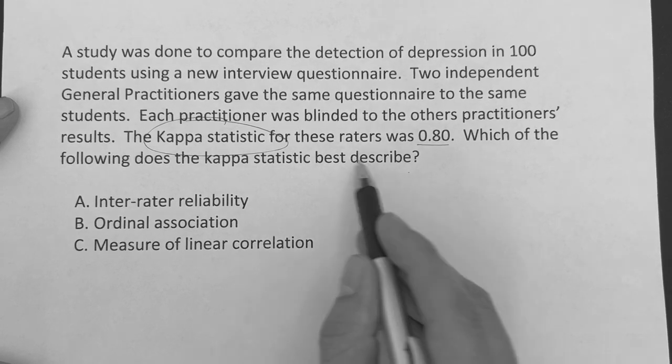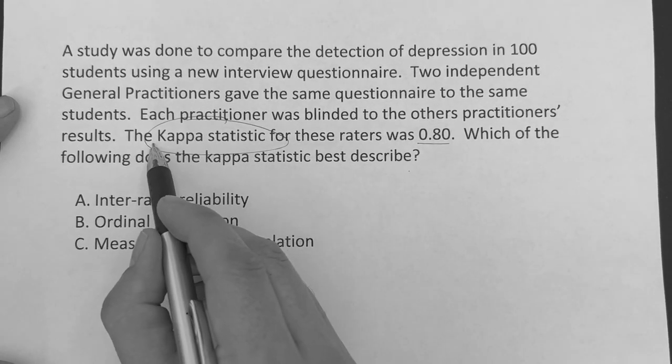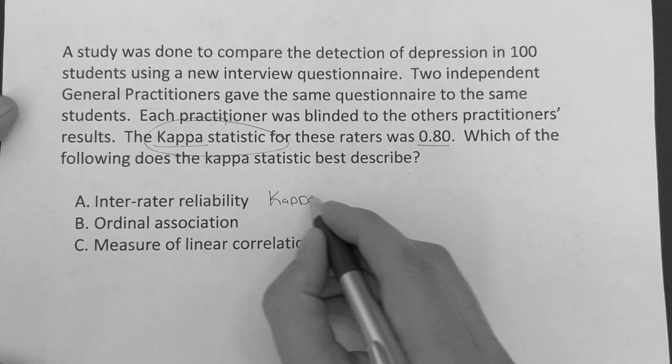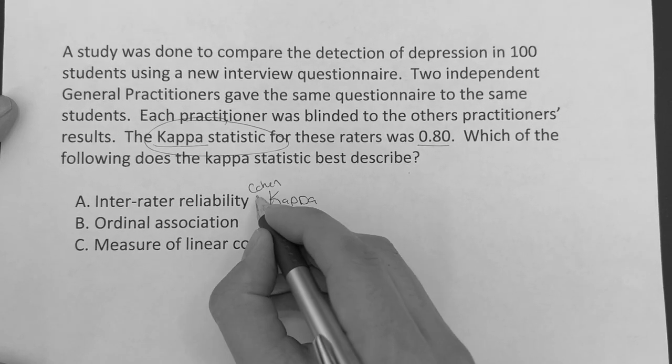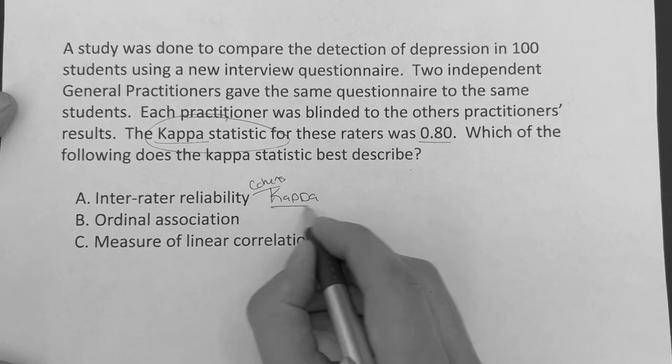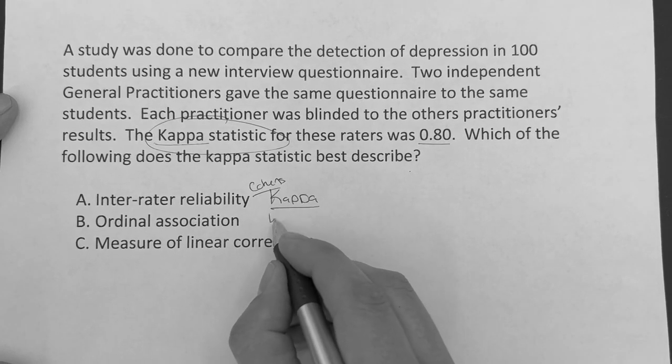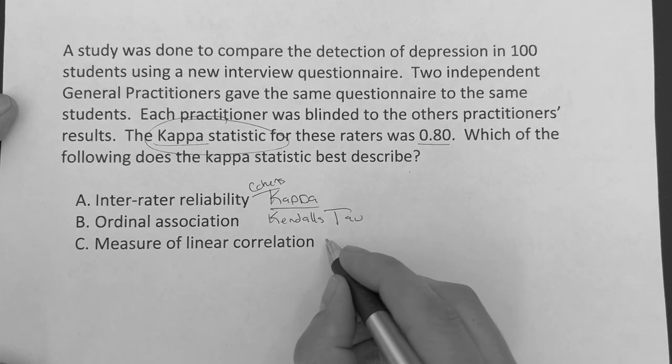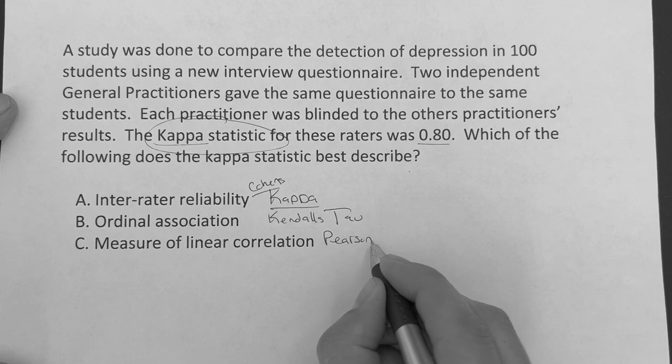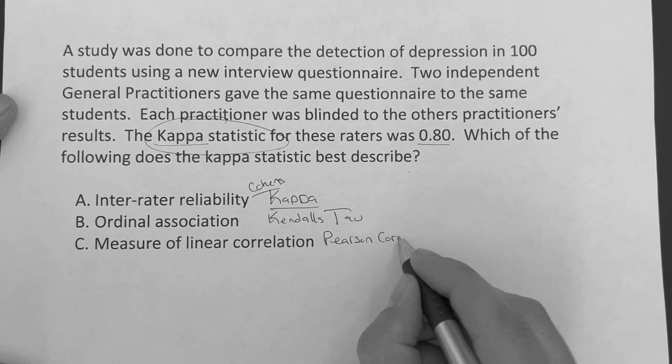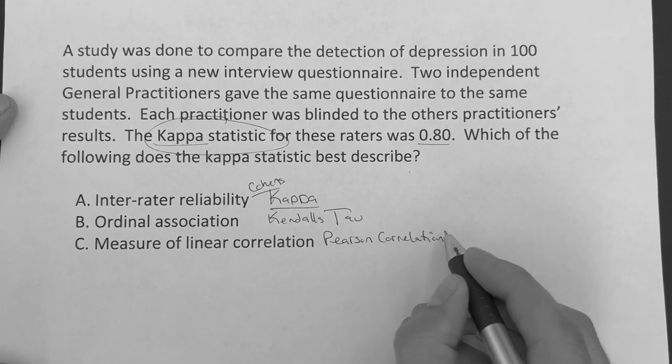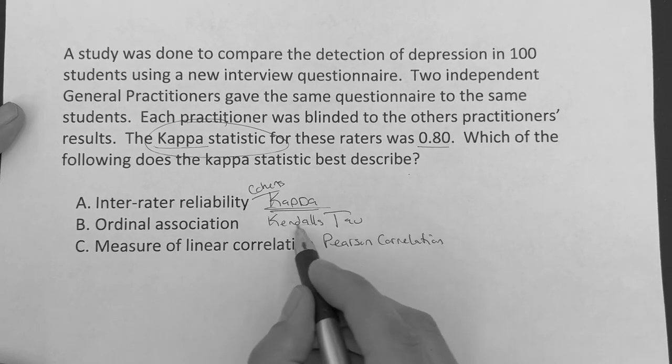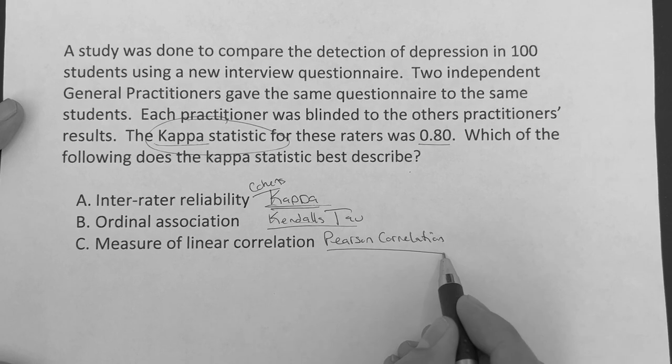So really whenever you see these kind of questions that may say kappa statistic, and I'll just put this one here. So we have the kappa statistic, more specifically the Cohen's kappa, and then we have this thing called the Kendall's tau that you may see, and then you'll have this one called the Pearson's, Pearson correlation, and we've seen that a lot with some other videos. But these are the three that you got to know for the step exams.